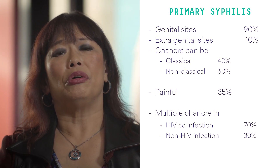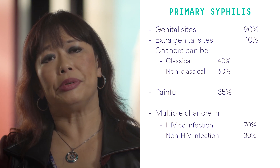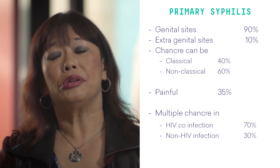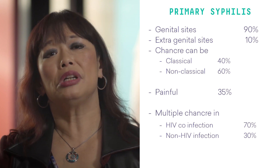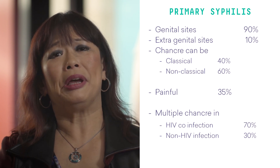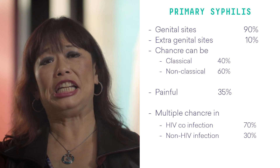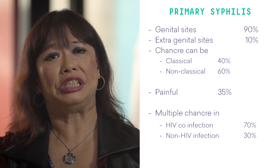It is important to remember that a solitary genital ulcer is syphilis unless proven otherwise. There can also be associated non-tender, rubbery, discrete regional lymphadenopathy. The chancre occurs in genital sites in 90% of cases and in extra-genital sites in 10% of cases. They can be classical in 40% of cases and non-classical in 60% of cases. The syphilitic chancre can be painful in 35% of cases and can also be multiple, particularly in HIV co-infection, in 70% of cases.